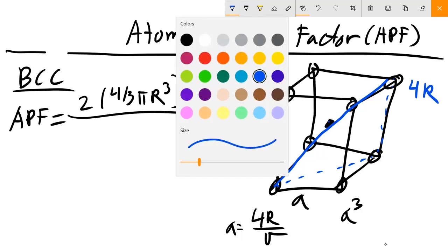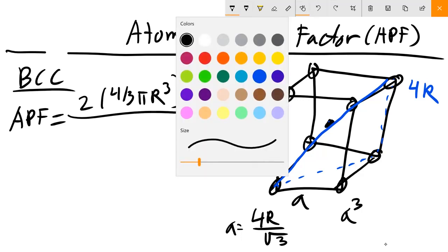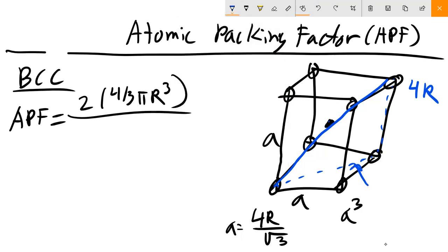So if we wanted to find a, we could just do some geometry and figure out from there that a equals 4R over root 3. Hopefully that's somewhat straightforward. This is a as well, so this is that diagonal is root 2a, and then you can solve.